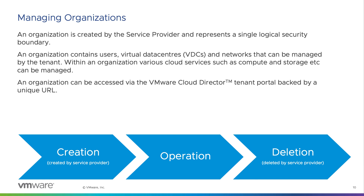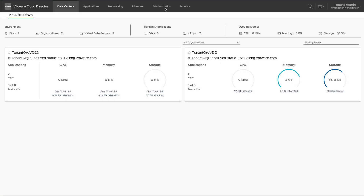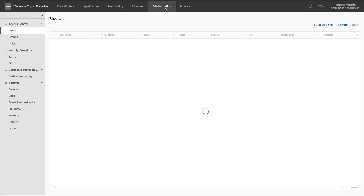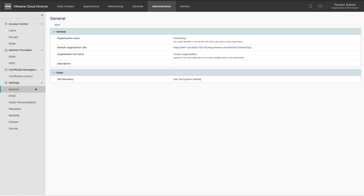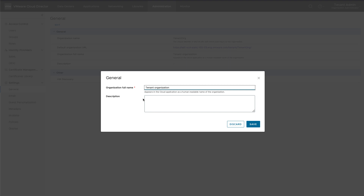An organization consists of granular roles and access mechanisms, and is accessed by a unique URL for the VMware Cloud Director tenant portal. An organization administrator has the rights to manage the organization's various settings. To review and edit those settings, go to the Administration tab and click on General Settings.